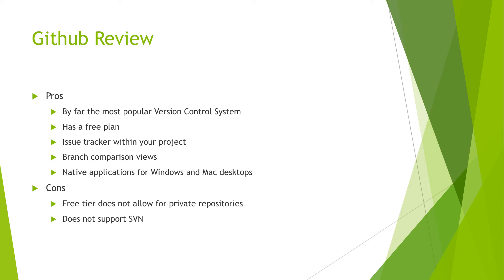What are the cons with GitHub? The first con is that GitHub's free tier does not allow for private repositories. A private repository is basically a project that others cannot see or get access to. So if you have a free account on GitHub, all of your repositories will be public, meaning people can access the code within. The other con is that GitHub does not support SVN, though they do have the ability to import Mercurial or SVN projects into Git.